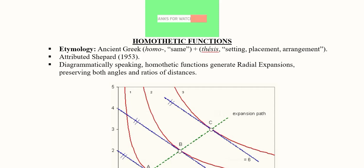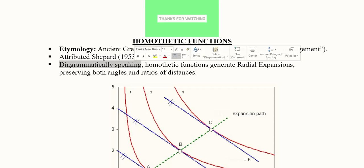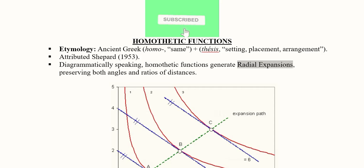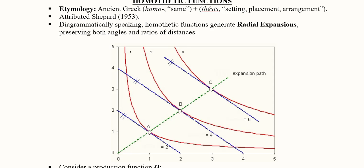So in this kind of function we will have the same kind of placement or arrangement. In a function there is a curve or a certain line. This is attributed to Shefferd 1953. When it comes to the diagram of homothetic functions, they generate radial expansions — the same sort of curves expanded following the same center point, giving the same formation but with an expansionary pattern. B and C represent further radial expansions, and this is the pattern of a homothetic function.